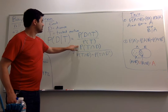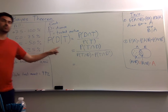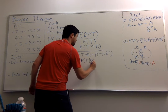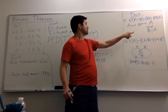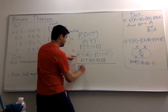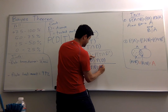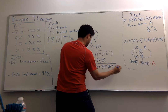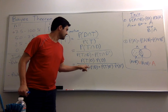Now, for the top and the bottom, we're going to use Formula 1. What is P(T intersection D)? It's the same as P(T|D) times P(D). And for the bottom, same thing: P(T intersection D) is P(T|D) times P(D), and P(T intersection D complement) is P(T|D complement) times P(D complement).